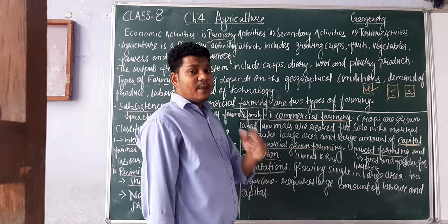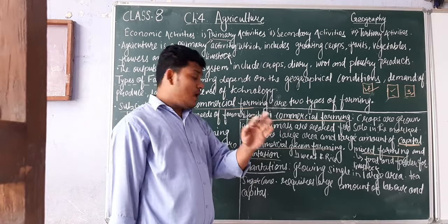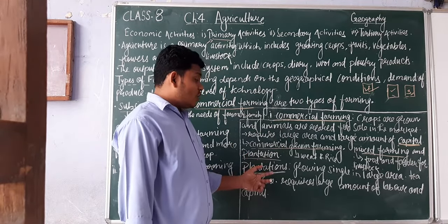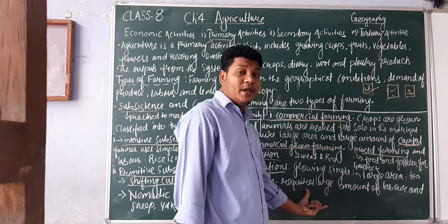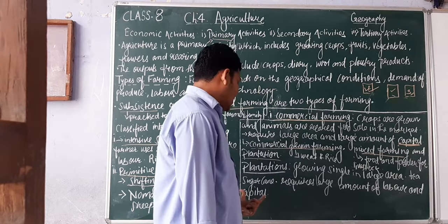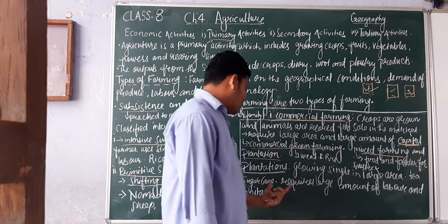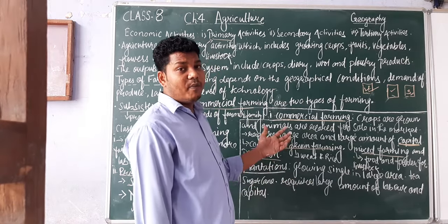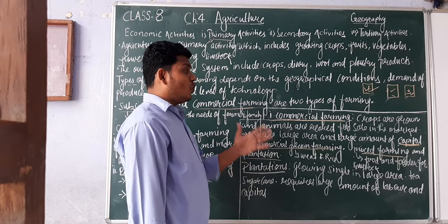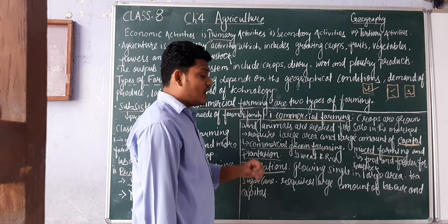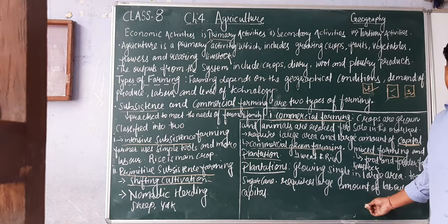The third type is plantation agriculture, where a single type of crop is grown over a large area. It requires a large amount of labor and capital. Major plantation crops include tea, sugarcane, rubber, and cotton. This type of farming is done only for sale in the market. That was the end of this session — thank you and have a nice day.